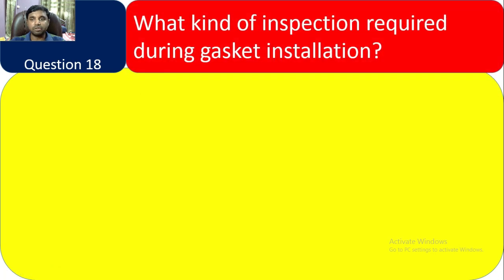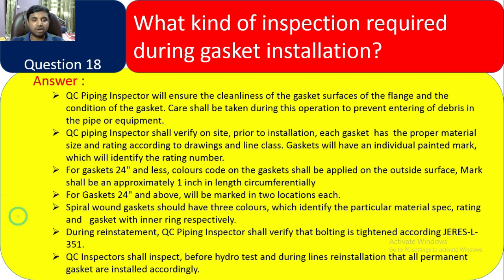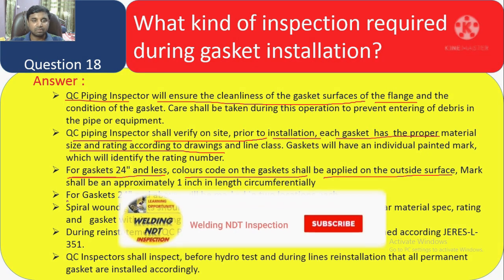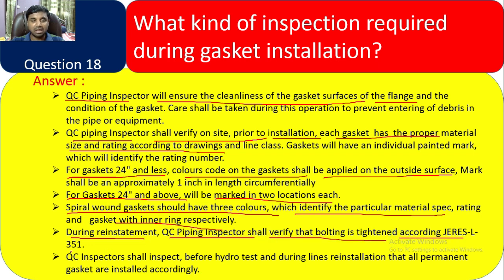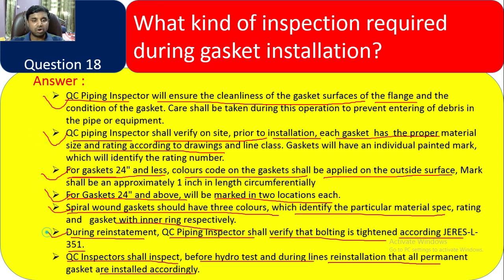Question 18: What kind of inspection is required during gasket installation? QC piping inspector will ensure the cleanliness of the gasket seating surface of the flange. QC piping inspectors shall verify on site prior to installation that each gasket has the proper material, size, and rating according to the drawing. For gaskets 24 inches and less, a color coat shall be applied on the outside surface. For 24 inches and above, marking shall be at two locations each. Spiral wound gaskets should have three colors identifying the particular metal, sealing gasket, and inner ring respectively. During reinstatement, QC inspector shall verify that bolting is tightened per the client specification torque table, and shall inspect before hydrotest that all permanent gaskets are installed accordingly.